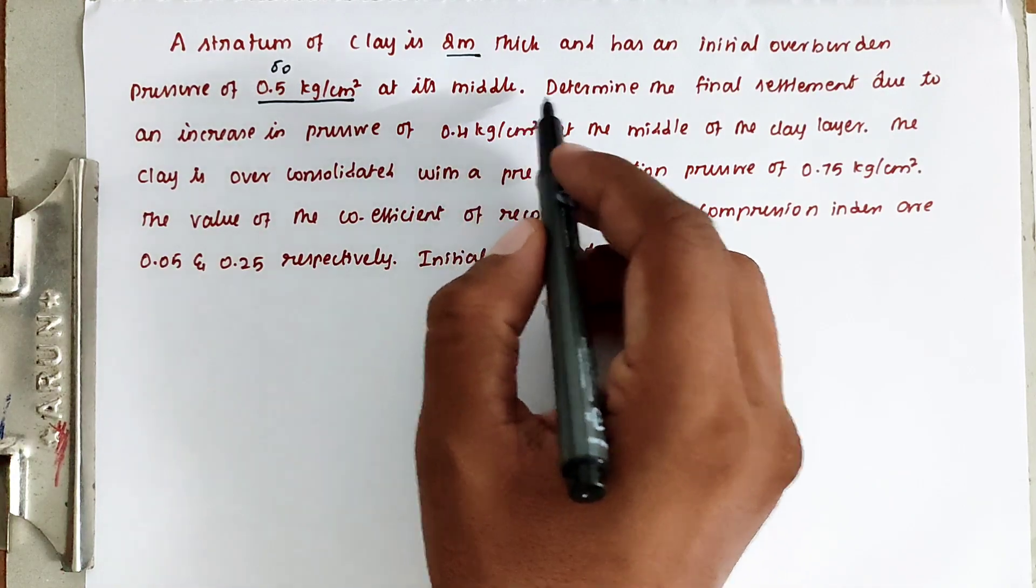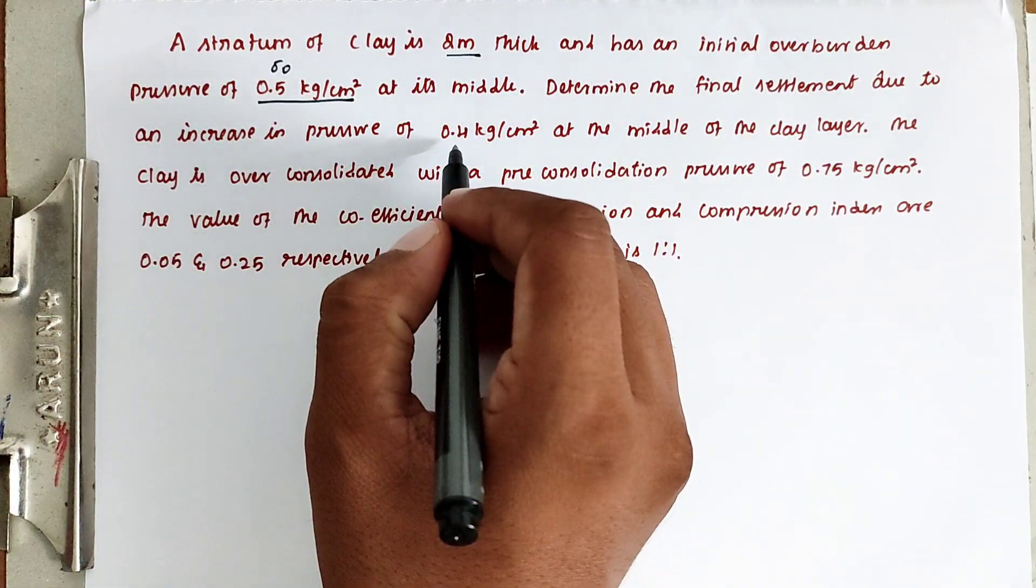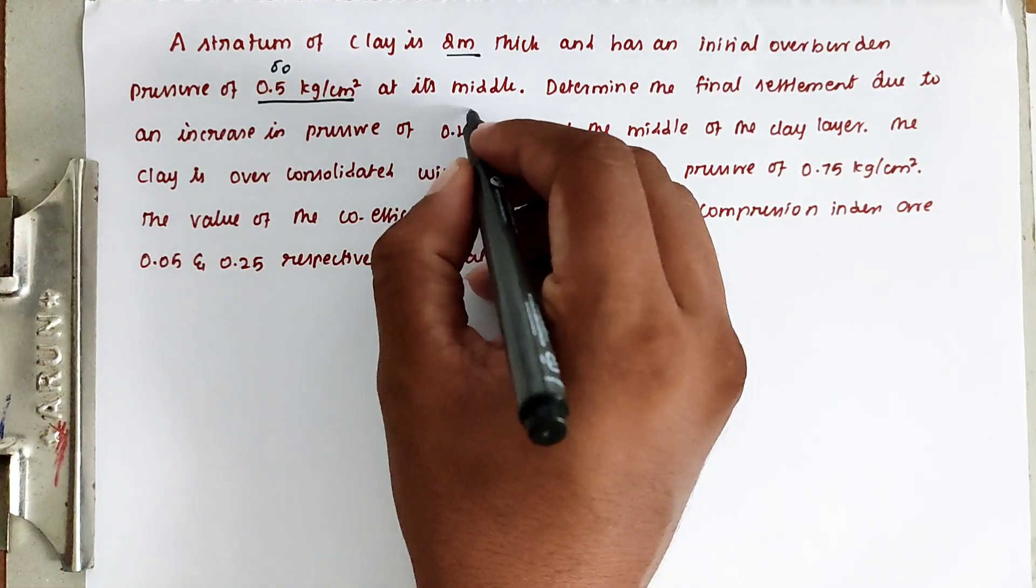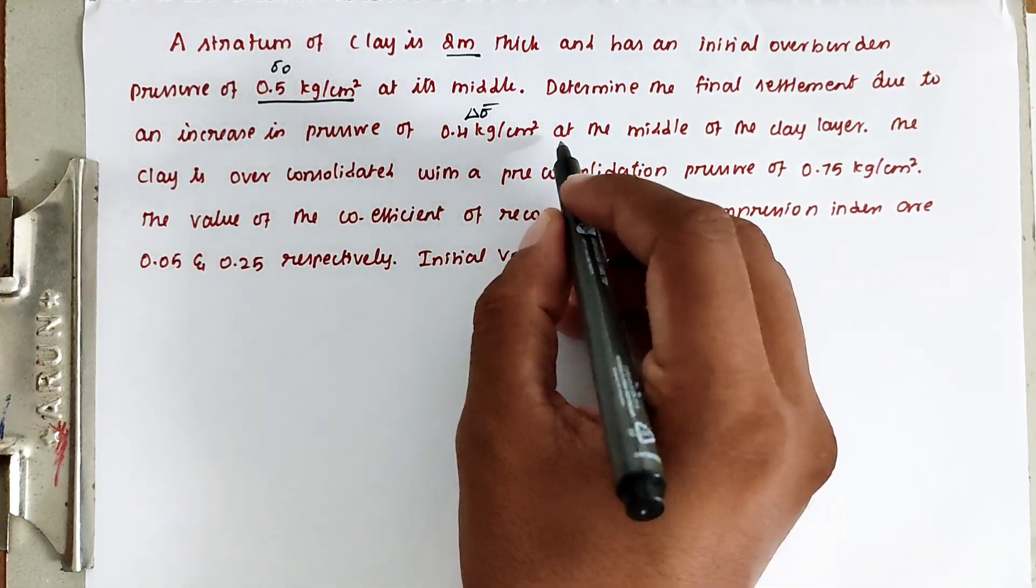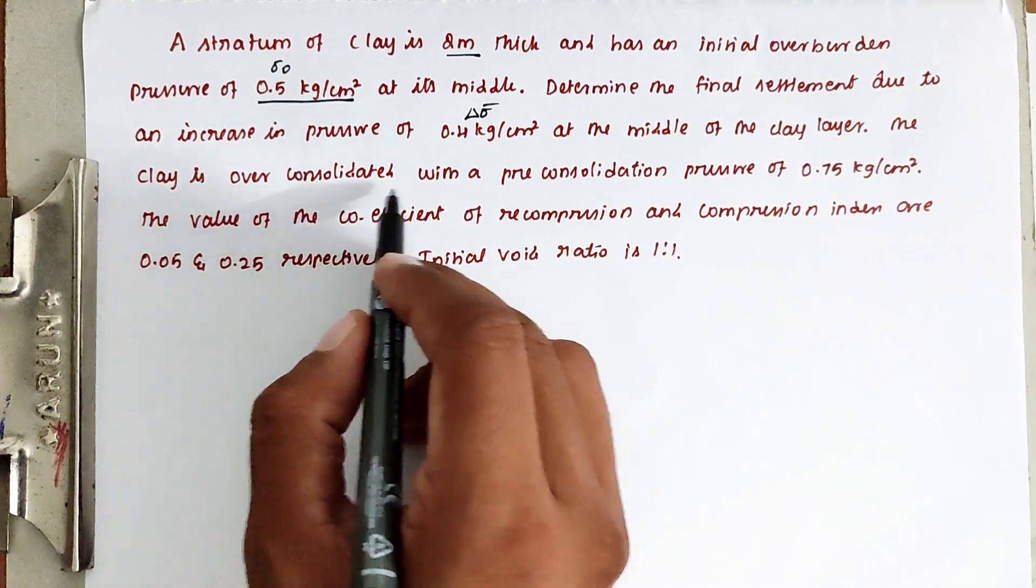At its middle, determine the final settlement due to an increase in pressure of 0.4. So the increasing pressure, del sigma dash, at the middle of the clay layer. The clay is over-consolidated.